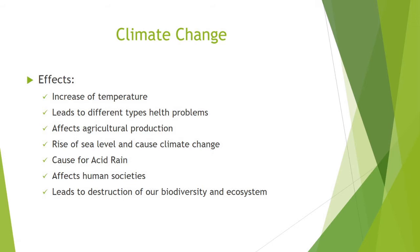It leads to different types of health problems — especially contagious diseases such as malaria, dengue fever, etc. Human societies will be severely affected by extreme climatic conditions such as droughts and floods. The situation of non-availability of food, shelter and safe drinking water will lead to disaster for mankind.